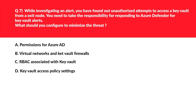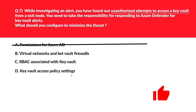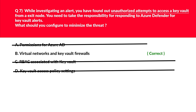This question will test your concept on Key Vault. Let's first look at option A — permissions for Azure AD. Active Directory permission has no relation with Key Vaults; it seems just a distractor — we'll reject this. Let's now look at option C and D together: option C says RBAC associated with Key Vault, and option D says Key Vault access policy settings. RBAC for Key Vault and Key Vault access policy settings will just check user permission connection to Key Vault and not suspicious IP addresses, which we require. Seems incorrect — we'll reject this.